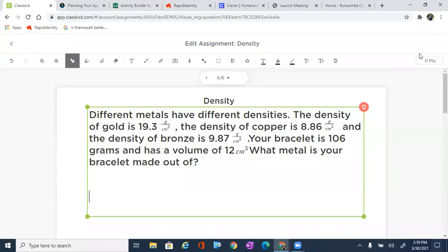All right, let's go ahead and look at density. It says different metals have different densities. The density of gold is 19.3 grams per cubic centimeter. The density of copper is 8.86 grams per cubic centimeter, and the density of bronze is 9.87 grams per cubic centimeter. Your bracelet is 106 grams and has a volume of 12 cubic centimeters. What metal is your bracelet made out of?